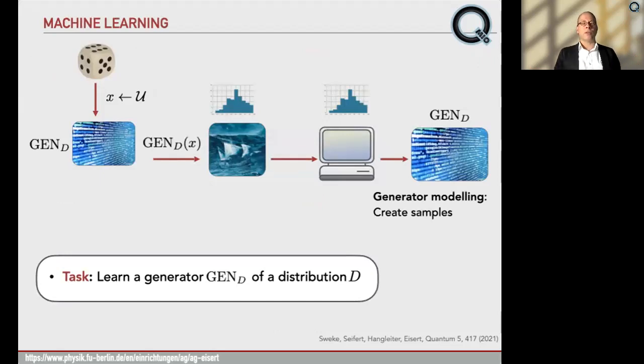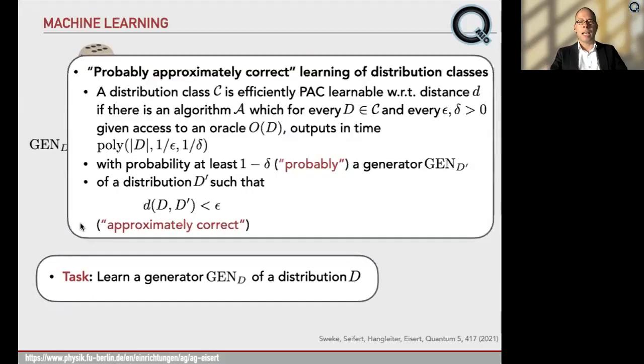So here, one is given a generator that takes random numbers and spits out samples from a distribution. Say, pictures of horses, if you want. And the task of the learner is to find a generator that, with high probability, spits out samples from pretty much the same distribution as the original one. So the task is to learn a generator of this distribution, D.